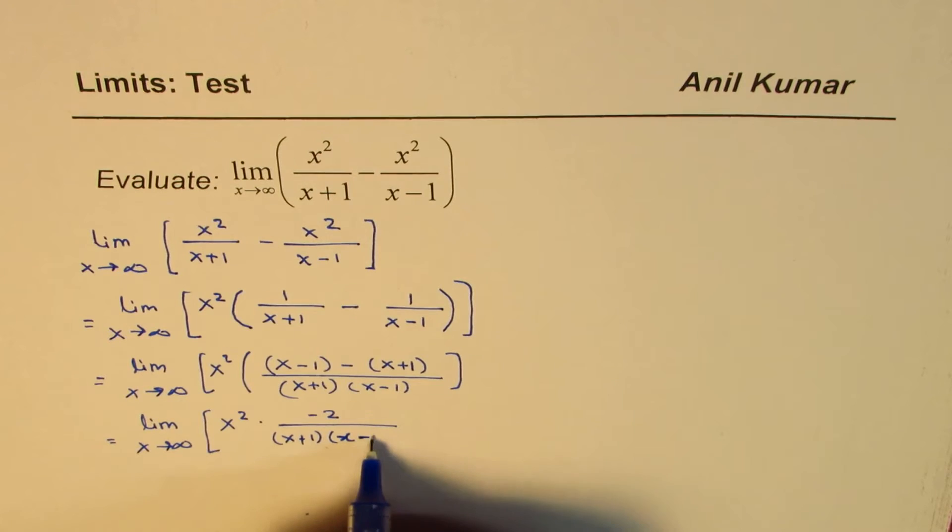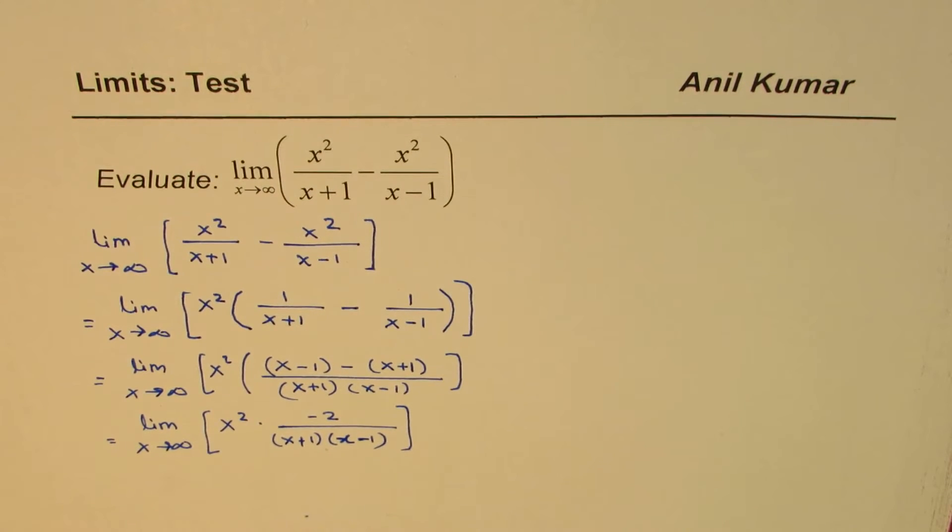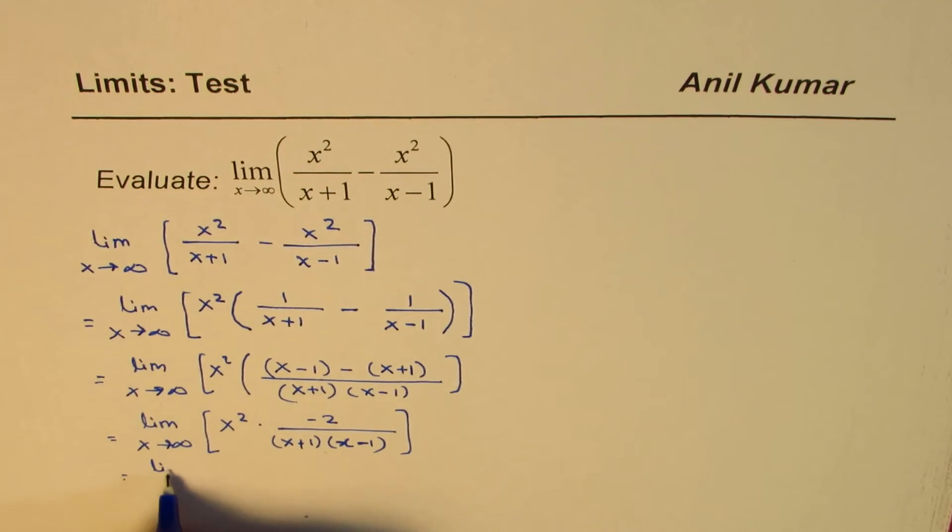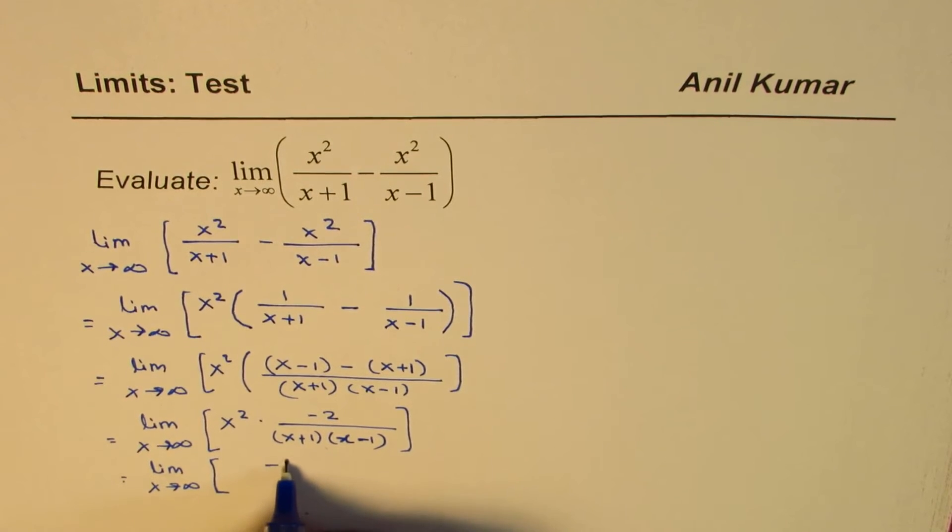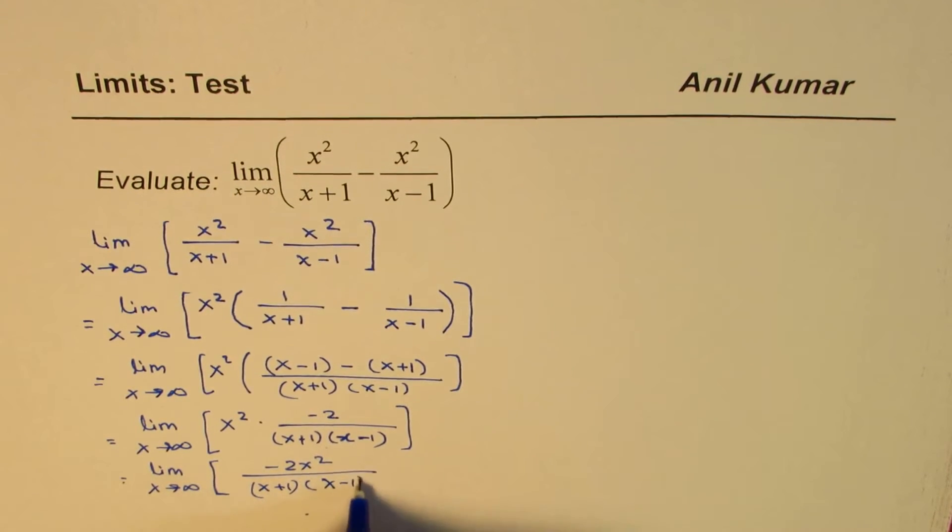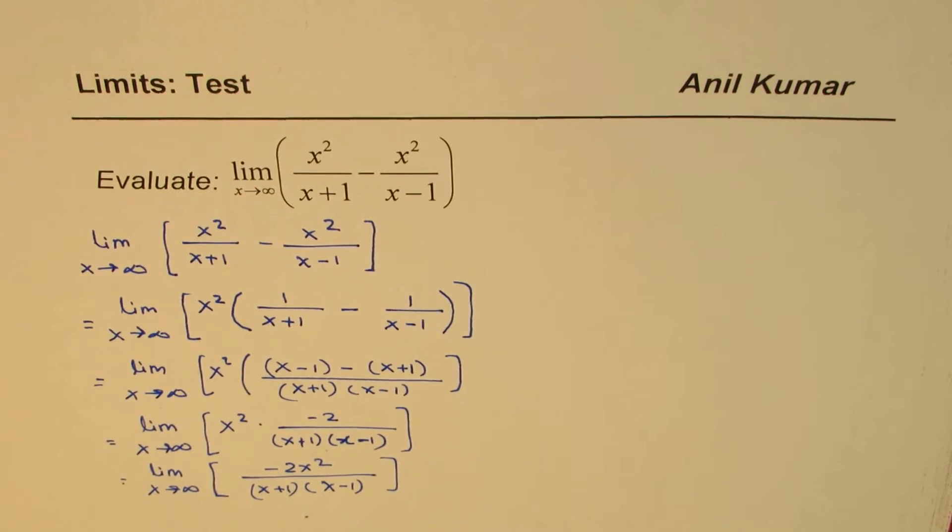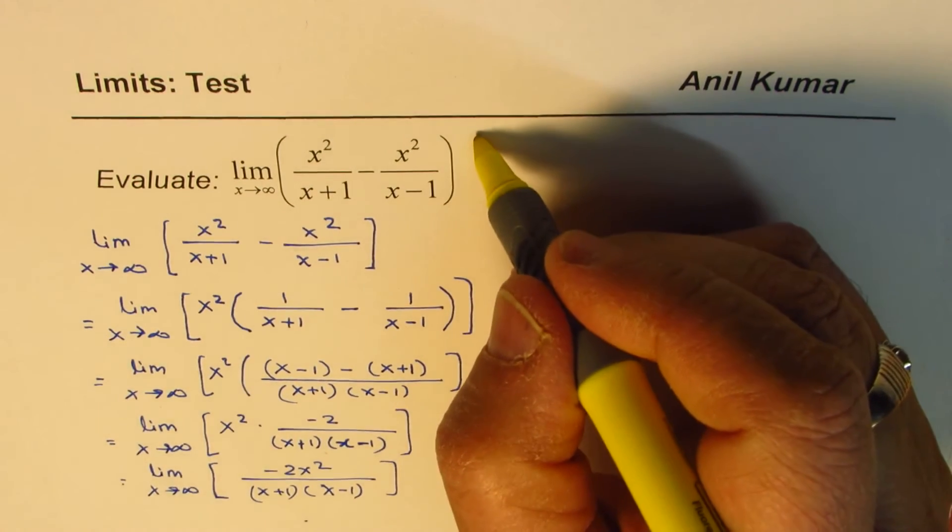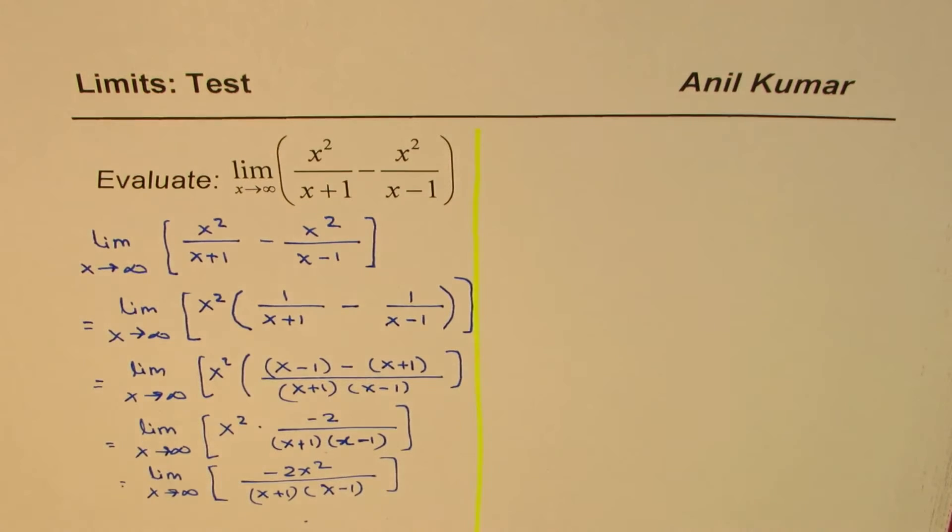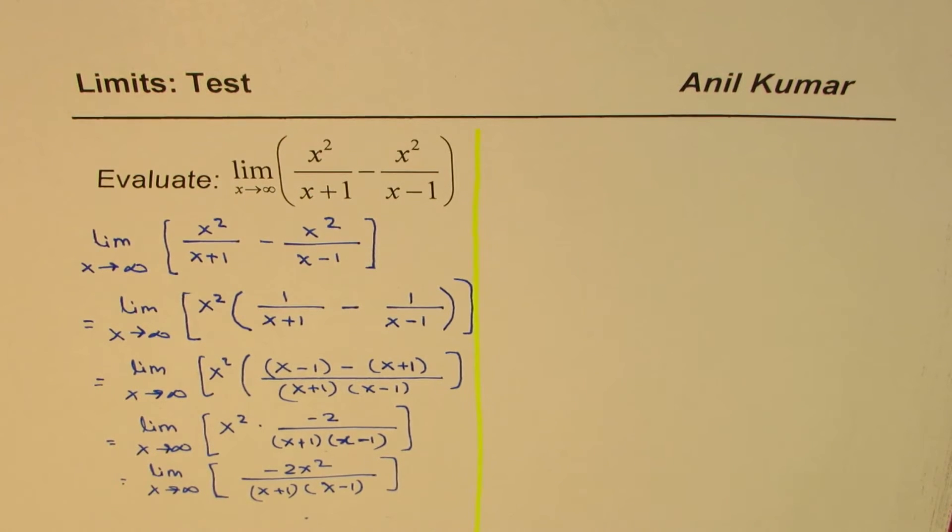I'll get this plus and minus. So that's what we get, and let me just rewrite this here, and then we'll further simplify on the right side of this page, because I'm going to use some tricks now. So this is minus 2x squared over x plus 1 times x minus 1. Now let me see how to solve this question.